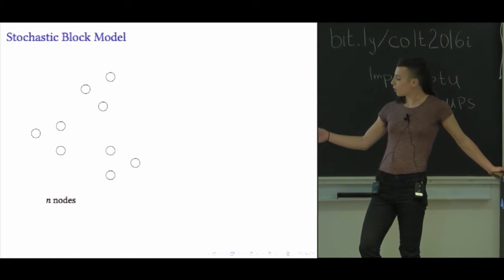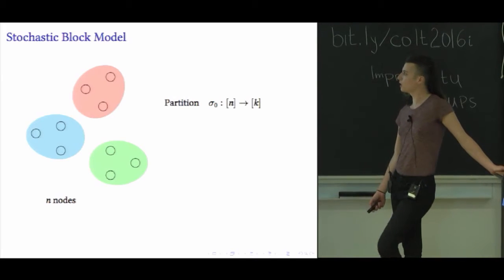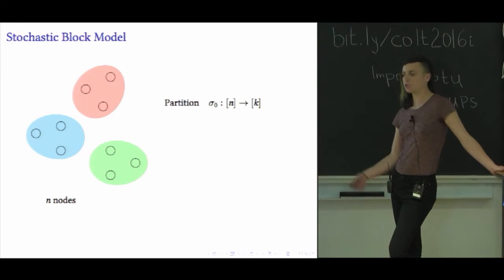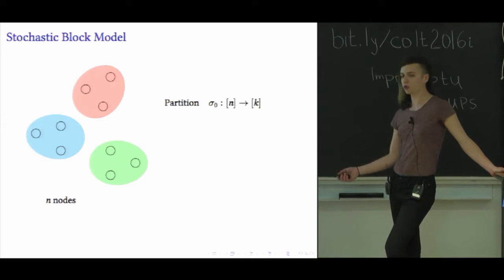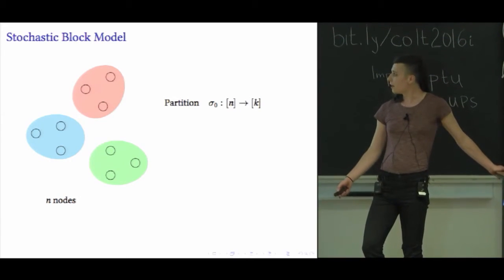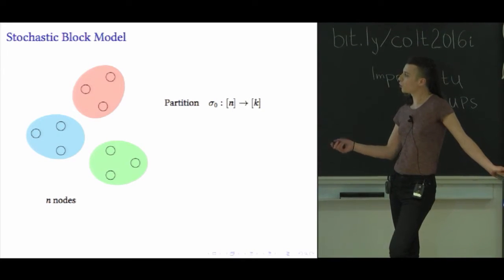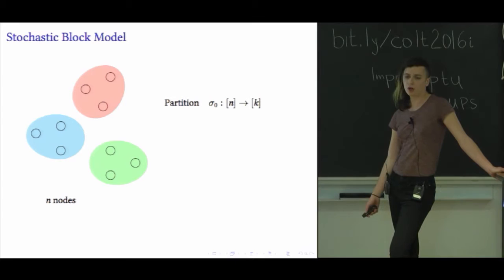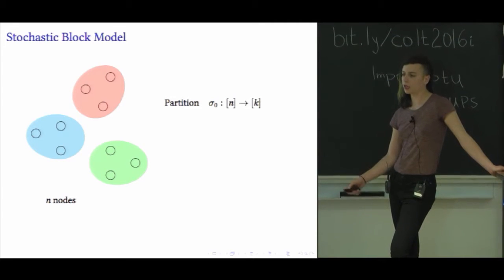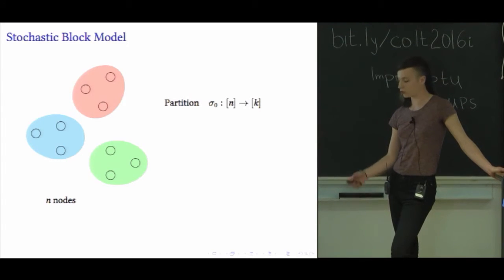To generate a graph, we start with n nodes. We choose some partition of these nodes into k different groups. Let's be Bayesian, so we'll imagine this partition was chosen from some prior distribution. The edges are then drawn independently so that the probability of each edge depends only on the types of its two endpoints.